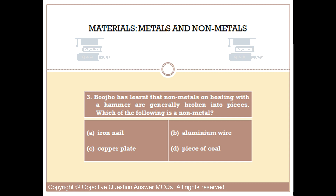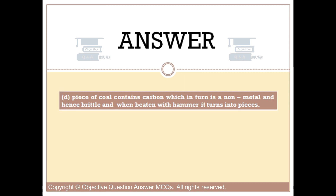The right answer is option D. Piece of coal contains carbon, which is a non-metal, and hence brittle — when beaten with a hammer it turns into pieces.